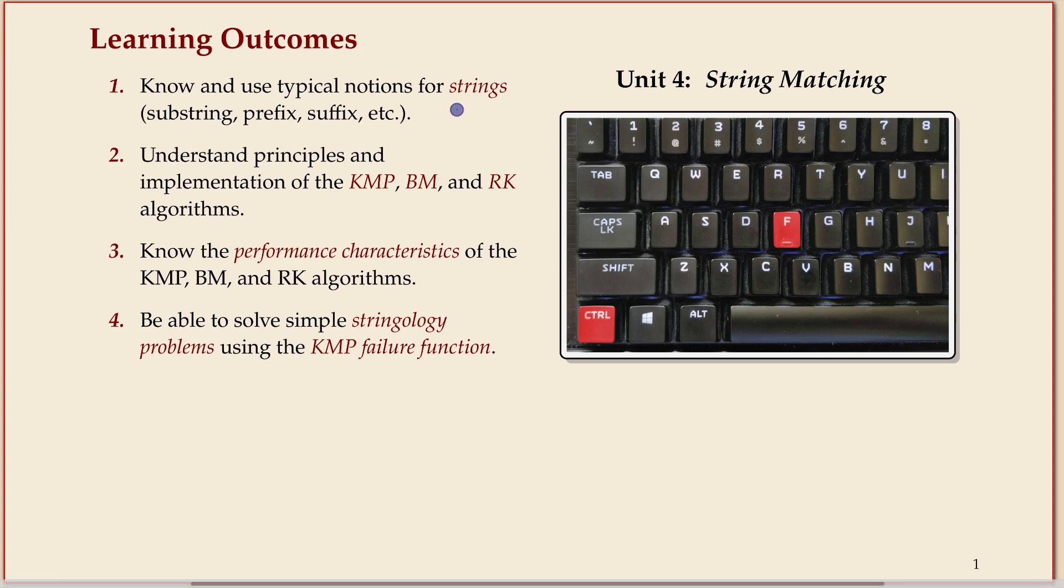My goals are first to introduce you to a bit of notation for strings, something we'll use over and over in the rest of the module. We'll concretely look at the Knuth-Morris-Pratt algorithm in detail, and the other two, Boyer-Moore and Rabin-Karp, might have to be skipped, which would mean you don't have to know about them. I also want to cover the performance characteristics of the algorithms that we cover.